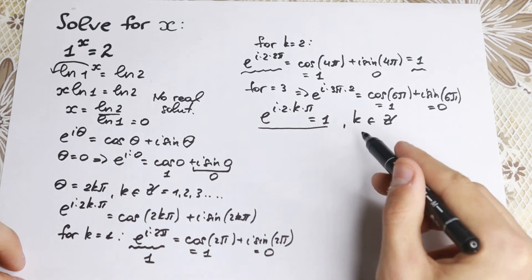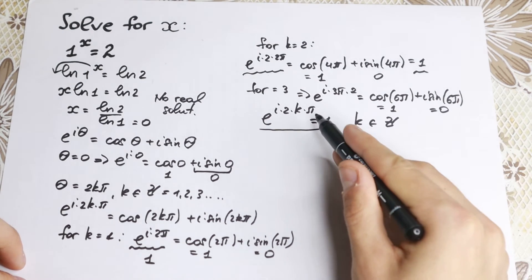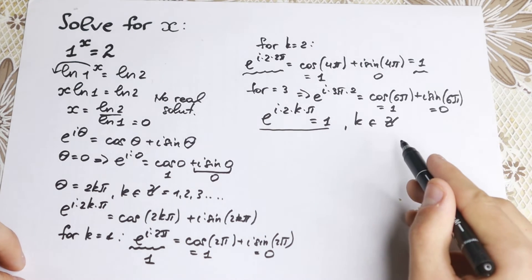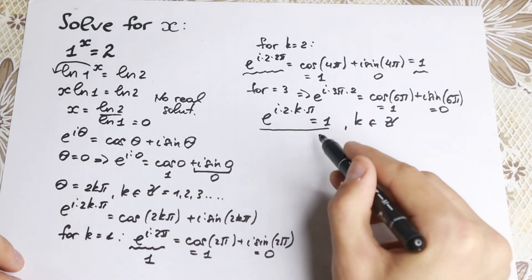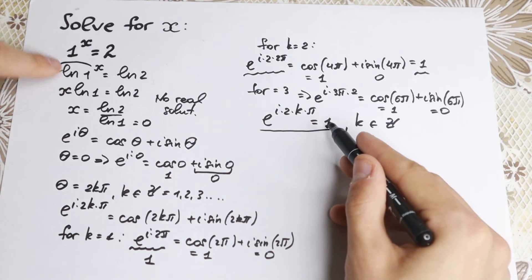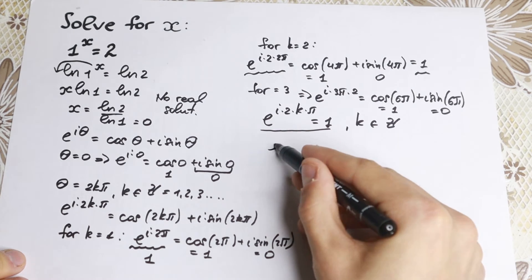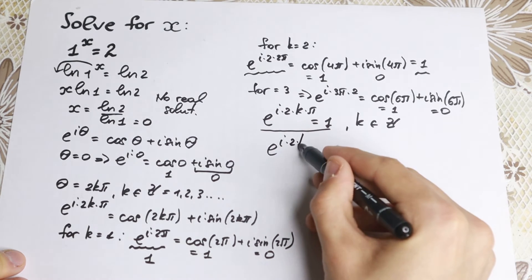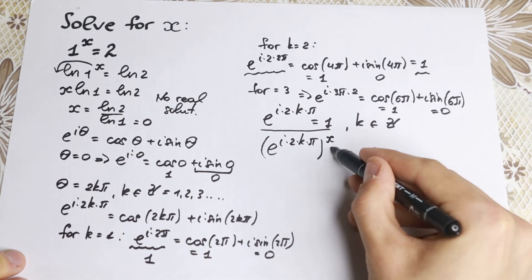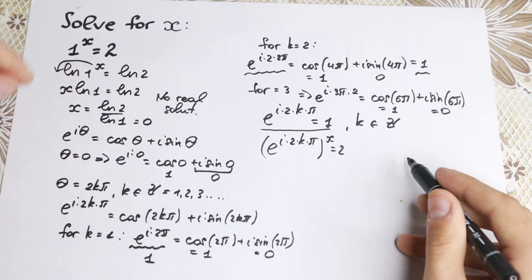We need to find this complex number. We know e to the power i times 2k pi equals 1, and 1 to the power x equals 2. So we can substitute this expression in place of 1, giving us: e to the power i times 2k pi, all raised to the power x, equals 2.